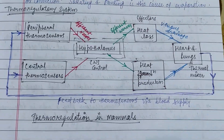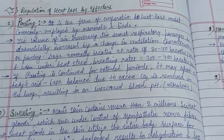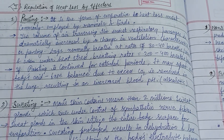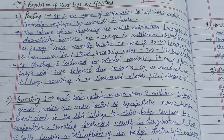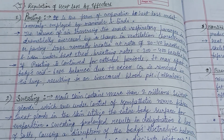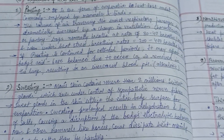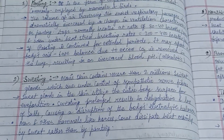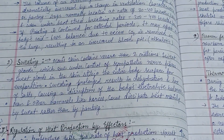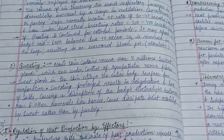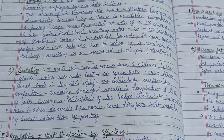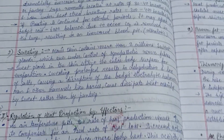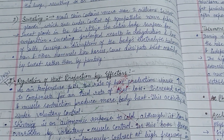There is a flowchart of thermoregulation in mammals. Here are some points on how factors regulate heat loss. First, panting — panting is observed normally in dogs for the regulation of heat. Sweating in mammals is another mechanism of heat loss.